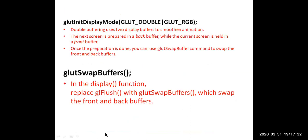glut_swap_buffer is used because in the main function the display mode is set to double buffer. Double buffering uses two display buffers to smooth animation of the object. The screen is prepared in a back buffer and front buffer. glut_swap_buffer swaps the contents between the front buffer and back buffer. The back buffer is used for loading the next content while the front buffer displays current content. So in the display function, instead of calling gl_flush, we call glut_swap_buffer.